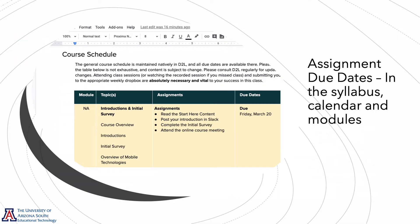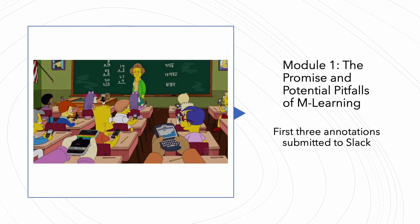Be cognizant of the due dates. This course is going to be a little bit different than others you might have taken in that several of the modules have multiple assignments due at the end of the module. You'll find the assignment due dates in the syllabus under the course schedule, in the course calendar, and in the modules themselves. In the first module, we're going to look at the promise and pitfalls of mobile learning. During the first three modules, you are going to be developing an annotated bibliography on a topic of your choice — you'll submit the first three annotations in this first module and post them to Slack so that you can look at others' and comment on theirs.